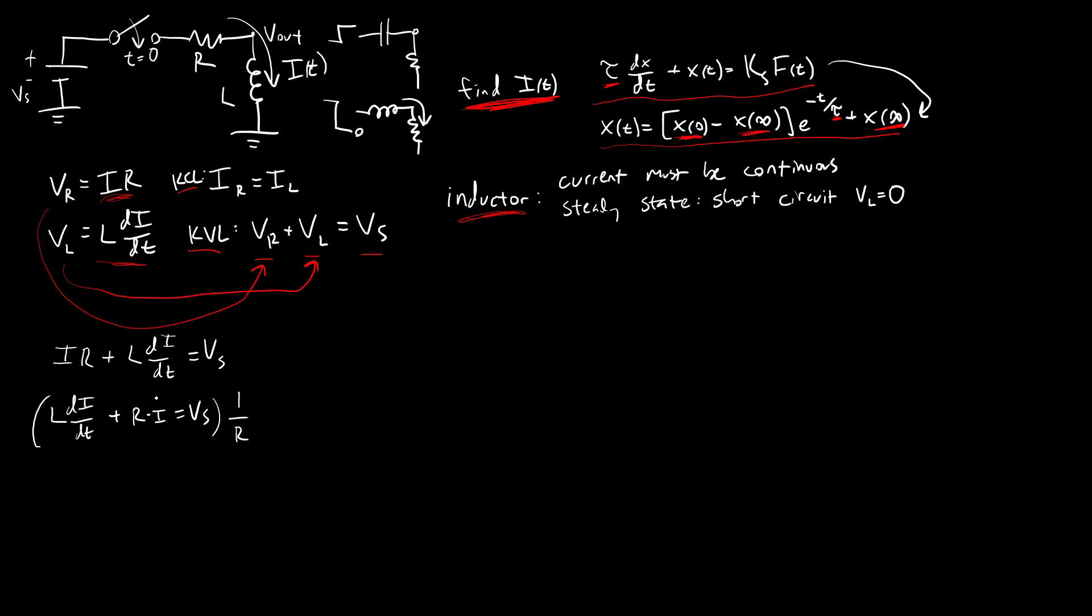That's going to give me L over R times di dt plus I of T equals VS over R.